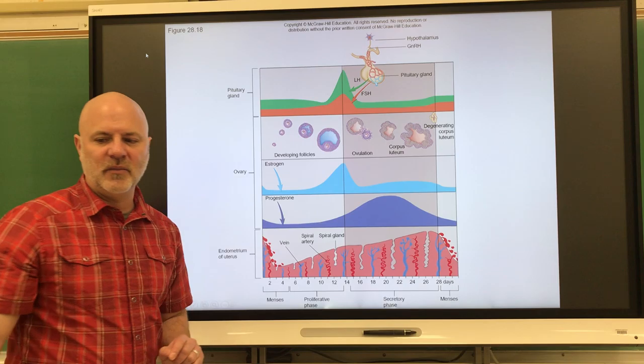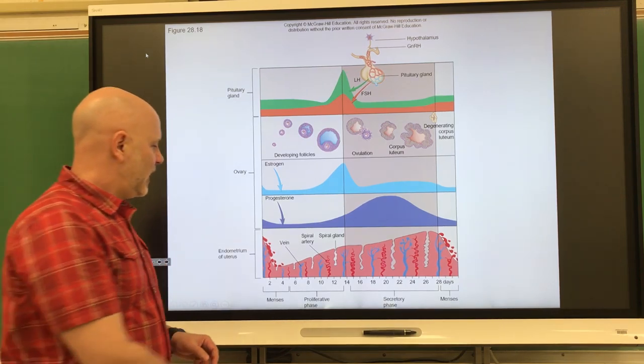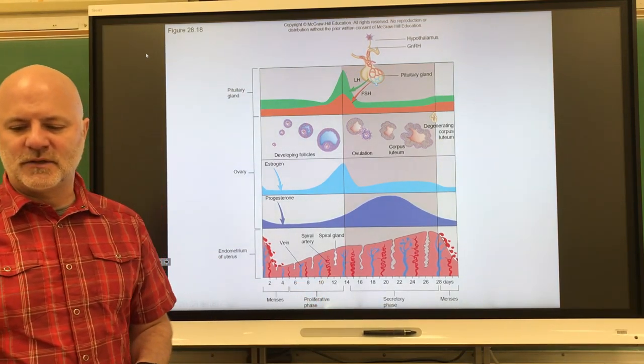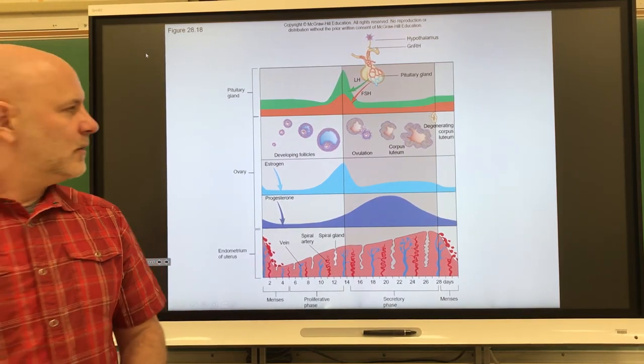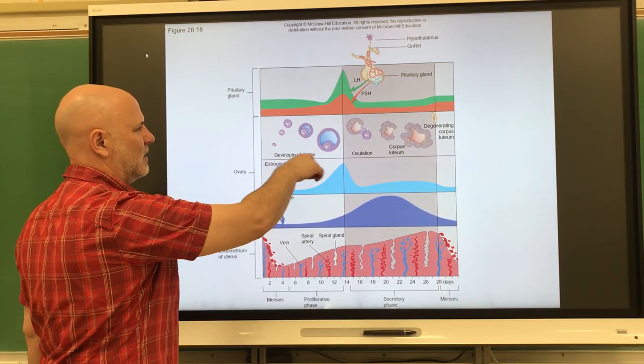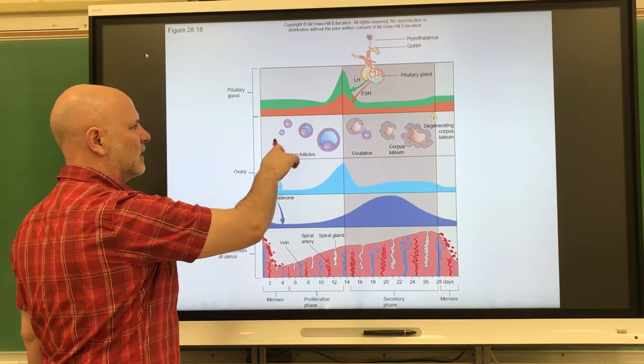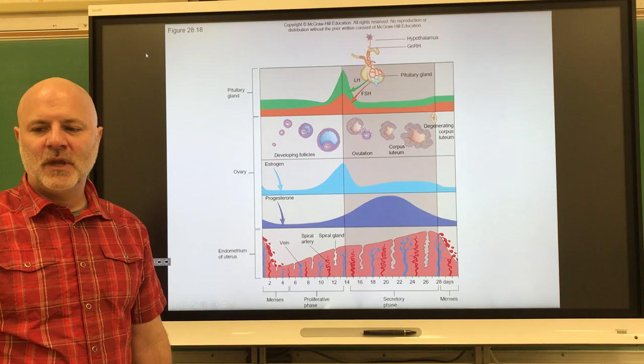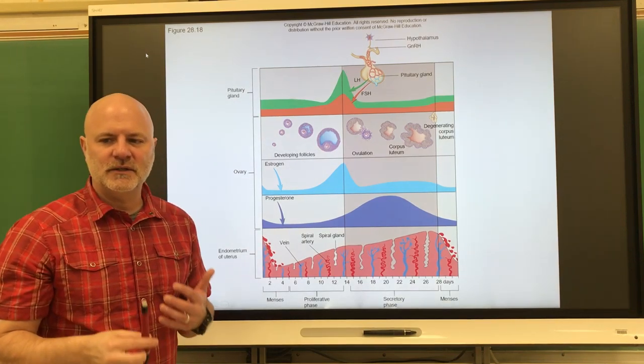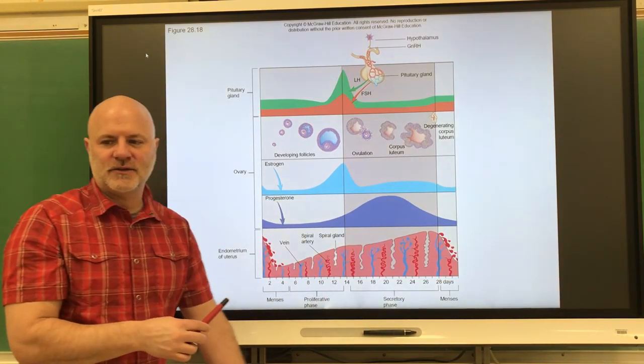After that, starting at day six, this is called the proliferation phase. Once again, we're seeing what's occurring in the ovary here. We're getting the follicles develop, we're getting secretion of estrogen occurring there. So the estrogen secretion is going to cause the endometrium to rebuild itself.